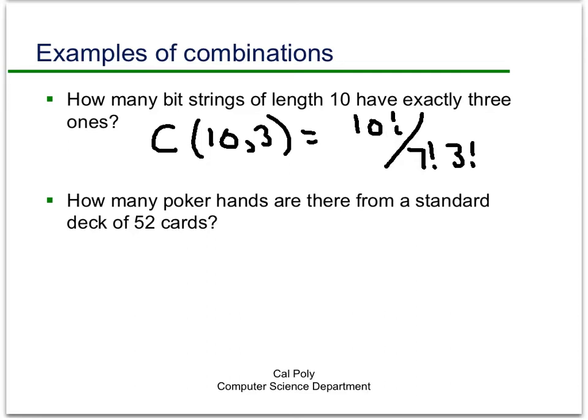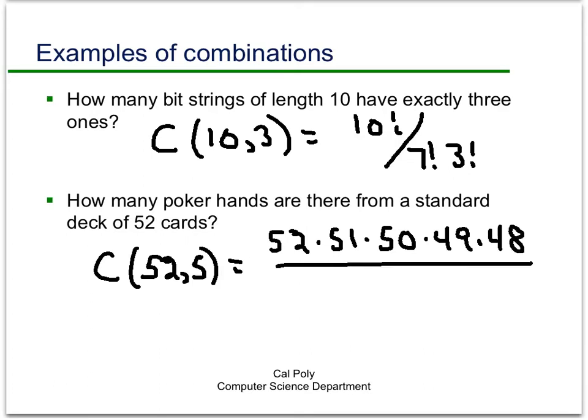The next example is, how many poker hands are there from a standard deck of 52 cards? We'll go over this in a lot more detail in class, but for right now, basically, just think of all 52 cards being different. And we want to find out how many different ways there are to pick 5 cards out of those 52. So in this case, that's just going to be C(52, 5). And that's going to be equal to 52 times 51 times 50 times 49 times 48 over 5 factorial. Which, these days, would be pretty easy to compute using a good calculator.